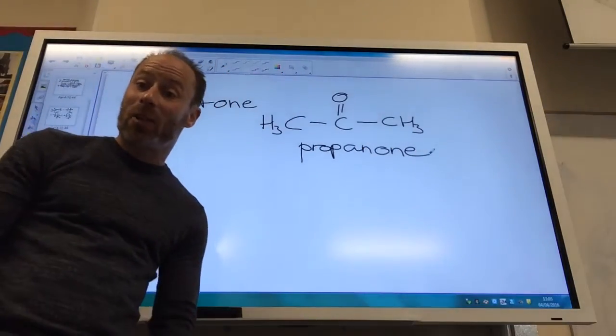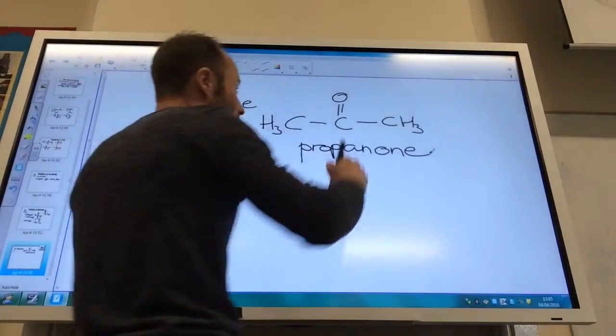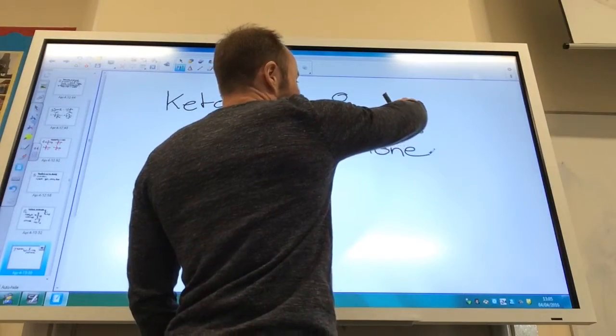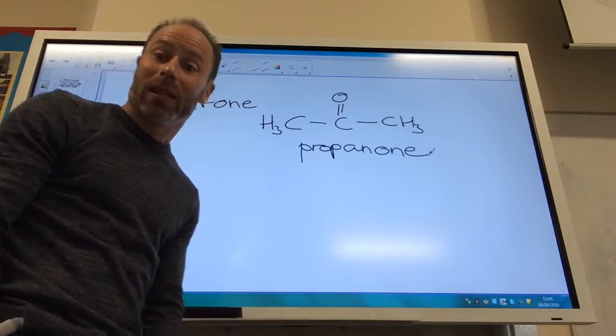Now, with ketones you need to think: do I need a number to tell me where that carbonyl is? But this one, no. What would it be if it was on the end? If I put that carbonyl on the end, it would be called propanal, because it would be an aldehyde.